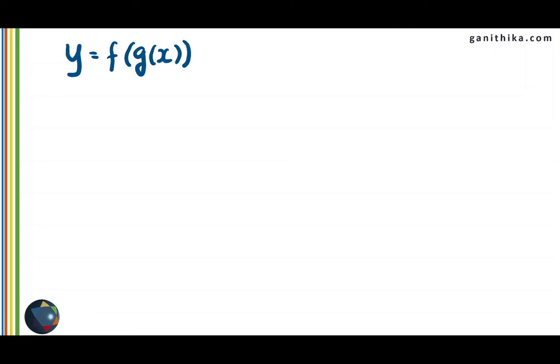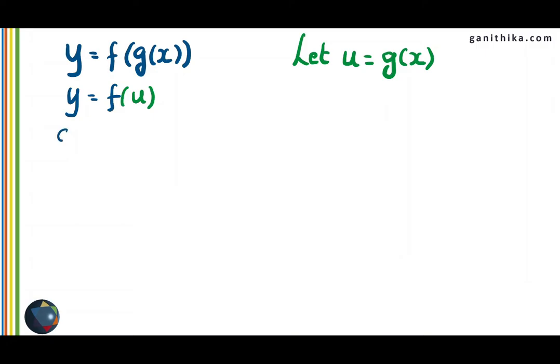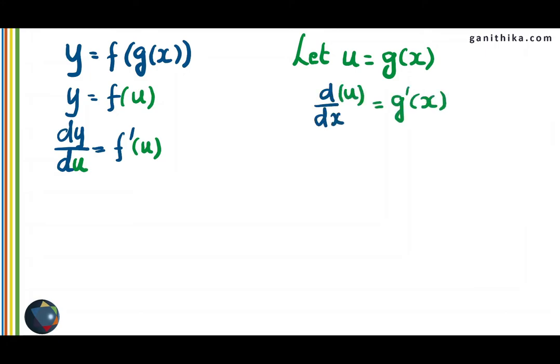Consider this function f of g of x. Obviously this is a composite function because g of x is plugged into f of x. Therefore there are two functions f of x and g of x, but one function is plugged into another function, therefore this is a composite function f of g of x. So let us consider this inner function g of x as u. Then the function y becomes f of u, which means I can find the derivative of y with respect to u: dy over du becomes f dash of u. Now u is a function of x, therefore I can find du over dx which is g dash of x.